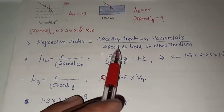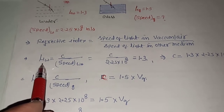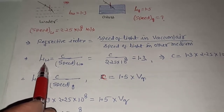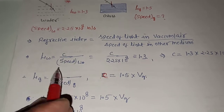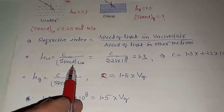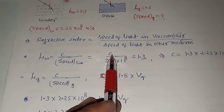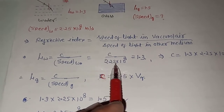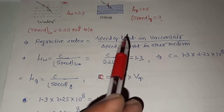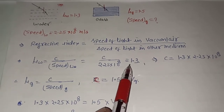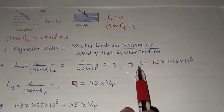We will apply the same formula for water. The refractive index of water equals the speed of light in vacuum (C) divided by the speed of light in water. The speed of light in water and the refractive index of water are both given. Multiplying both sides, we get the first expression for C.